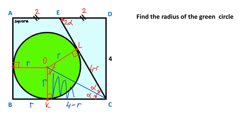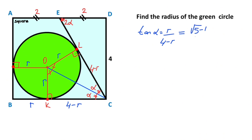Now, focusing on this triangle and calculating tangent alpha: tangent alpha equals r over (four minus r). We also know that tangent alpha equals (root five minus one) over two. After cross multiplication: two r equals four times root five minus (four minus r) times root five plus r.